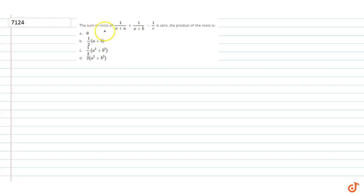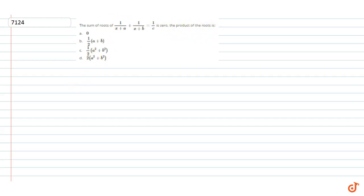In this question, the sum of the roots of 1/(x+a) + 1/(x+b) = 1/c is 0. The product of the roots is which of the following? Our equation is 1/(x+a) + 1/(x+b) = 1/c.